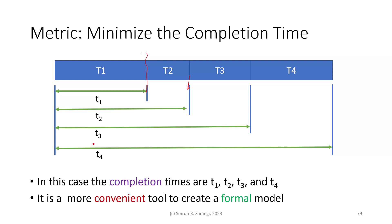Minimizing the sum of completion times is by far the most popular and common objective function when creating a formal scheduling model. This holds for both a non-preemptive setting and a preemptive setting. In a preemptive setting, other tasks may come in and delay task 1, so task 1 may end later, and that later time would be its completion time T1.